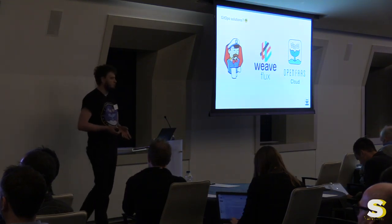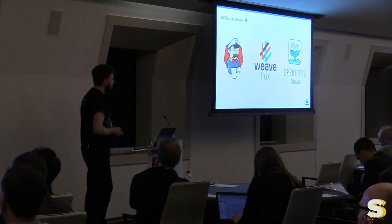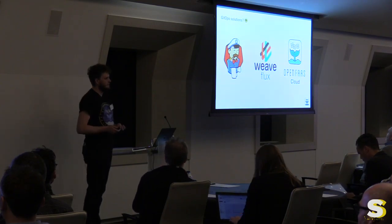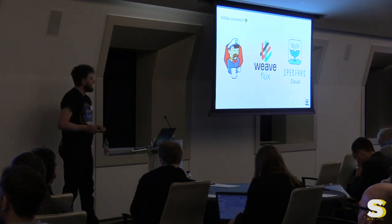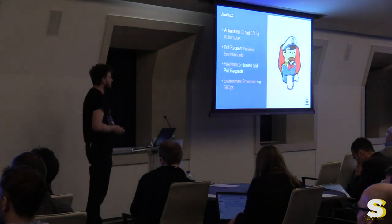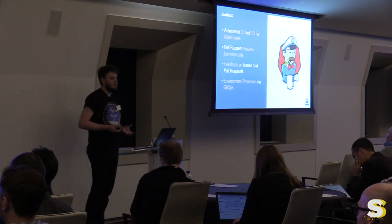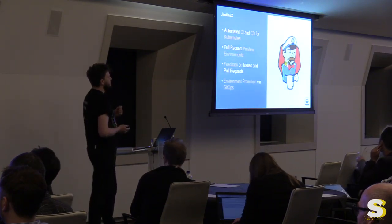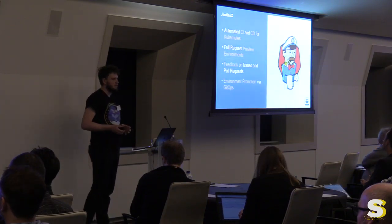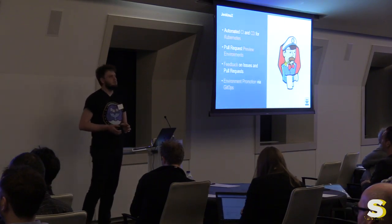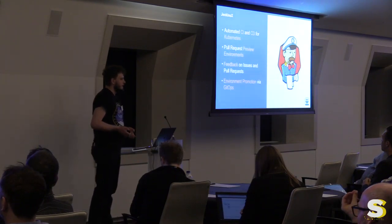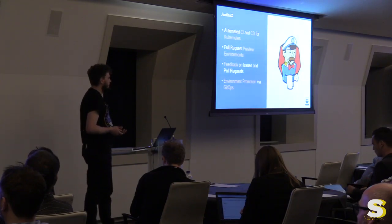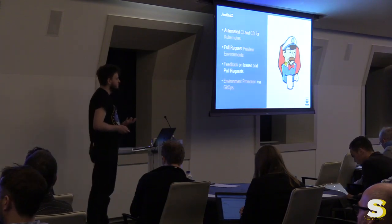What are the currently available solutions for Kubernetes to implement GitOps? We have Jenkins X, which is a relatively new release. Jenkins X is a native CI/CD solution just for Kubernetes. They tried to create a tool that is much more opinionated and easier to manage than Jenkins, because with Jenkins you can do one thing in a thousand different ways. They wanted to make it much smoother.